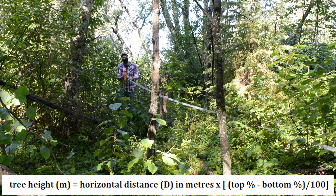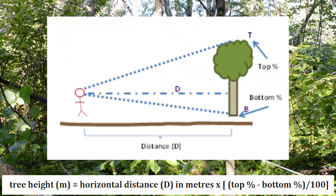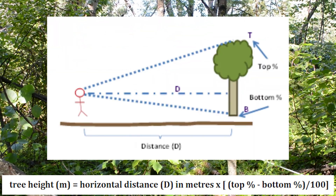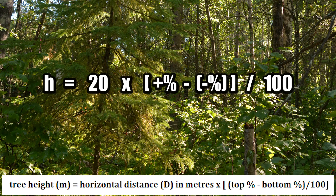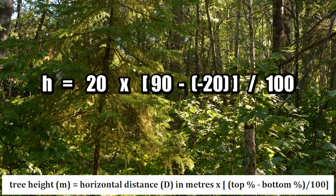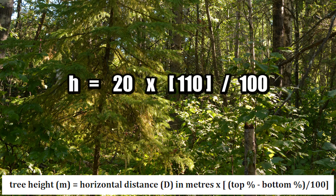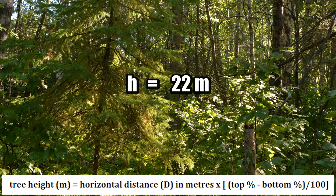Using this equation, we take the horizontal distance we are standing from the tree, along with those angles of measurement recorded as percentages, and calculate the height of the tree. We have our top percent measurement minus the bottom percent measurement — keep in mind we are subtracting a negative value. Divide this by 100 to give you the final percentage, then multiply by your horizontal distance to the tree, and we have our tree height.